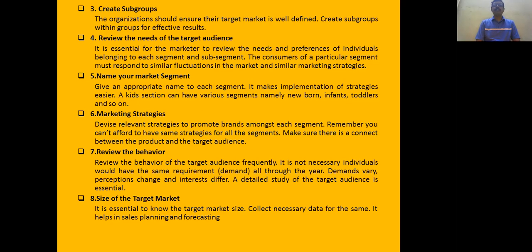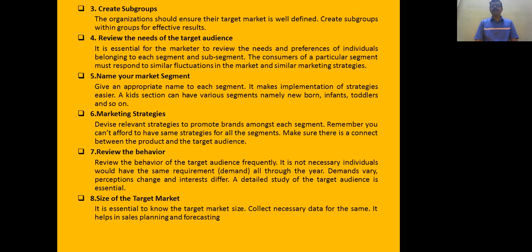The next step is to create groups and subgroups — all children as one group, all women as one group, all high-class people as one group, and so on. Then, review the needs of each subgroup. Separate studies are undertaken to examine the category of needs of each group of people.